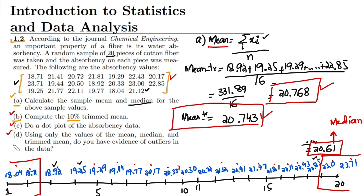Now let me see what Part D is asking. Part D asks: using only the values of the mean (this is the value of the mean), median (this is the median), determine if you have any evidence of outliers in the data.